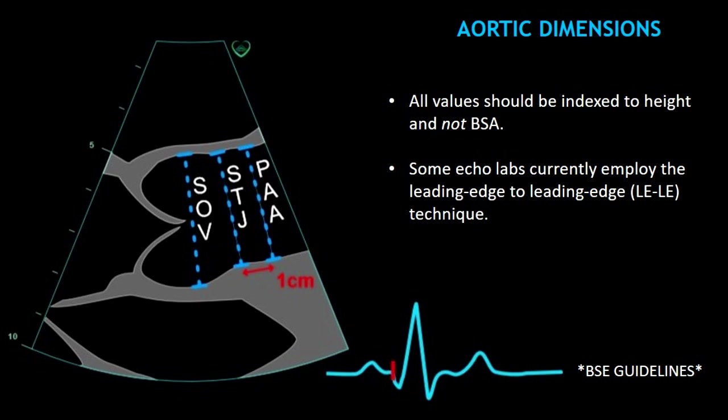This year the British Society of Echocardiography released new guidelines, and one of the major changes is aortic values should be indexed to height and not to body surface area. Some echo labs currently employ the leading edge to leading edge technique — if you use this technique, just continue doing it to avoid discrepancies.